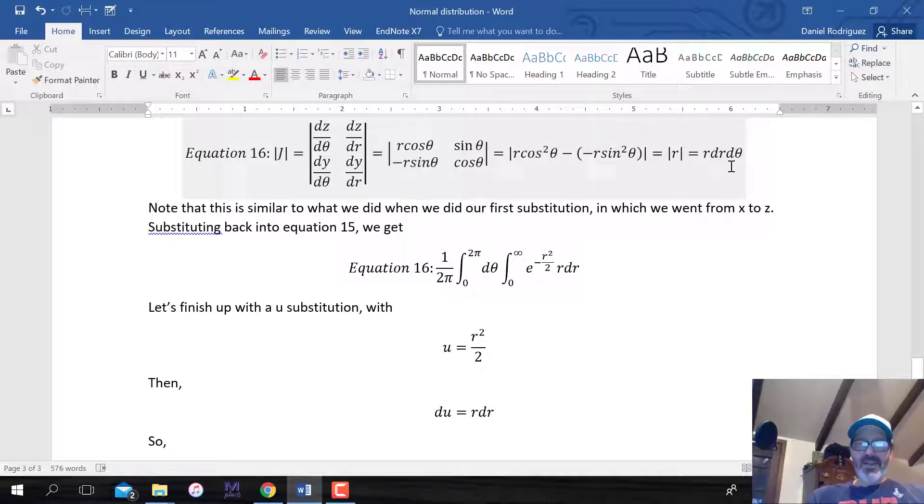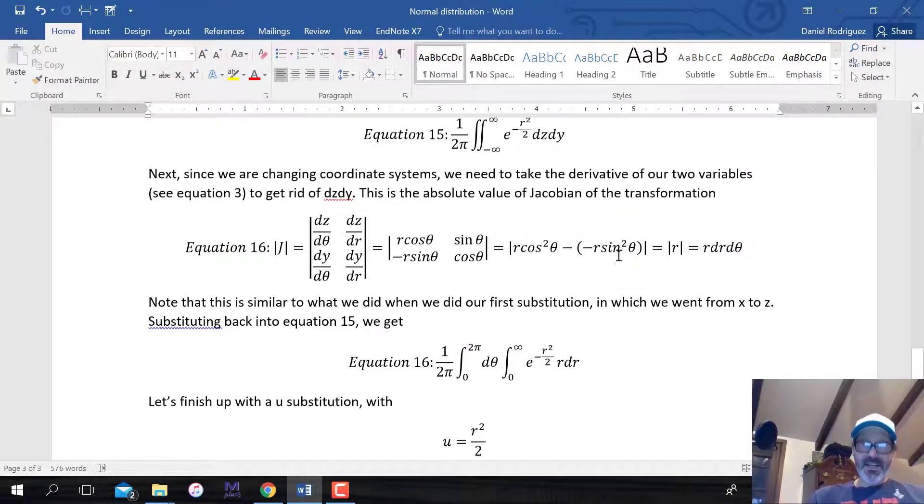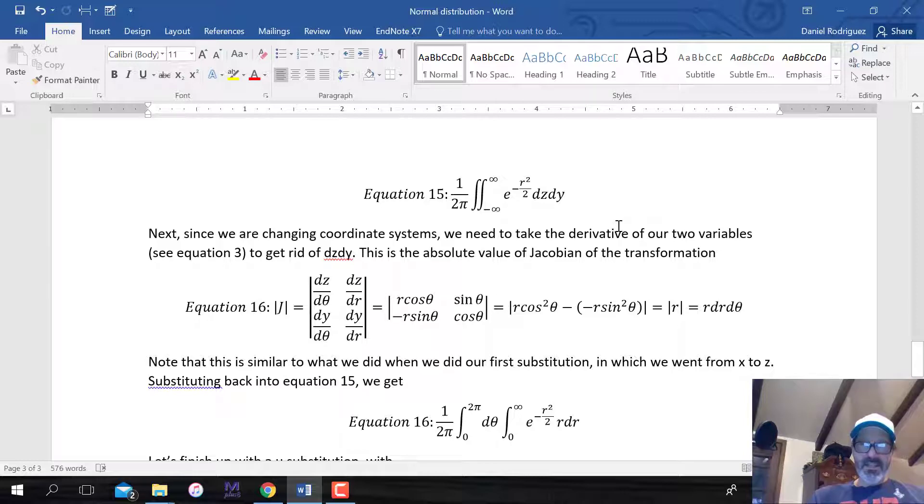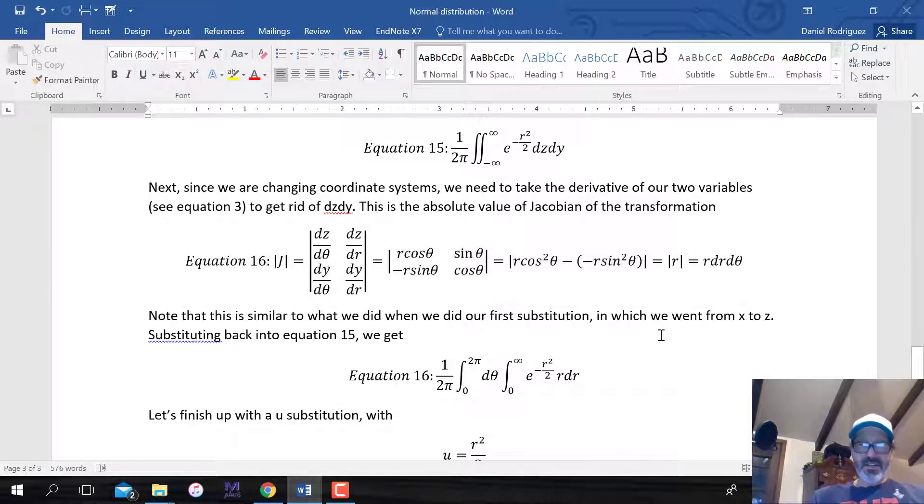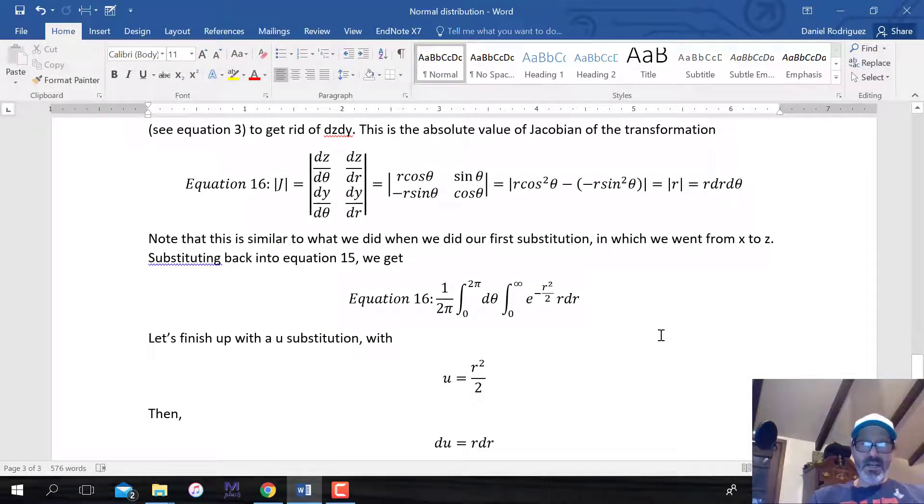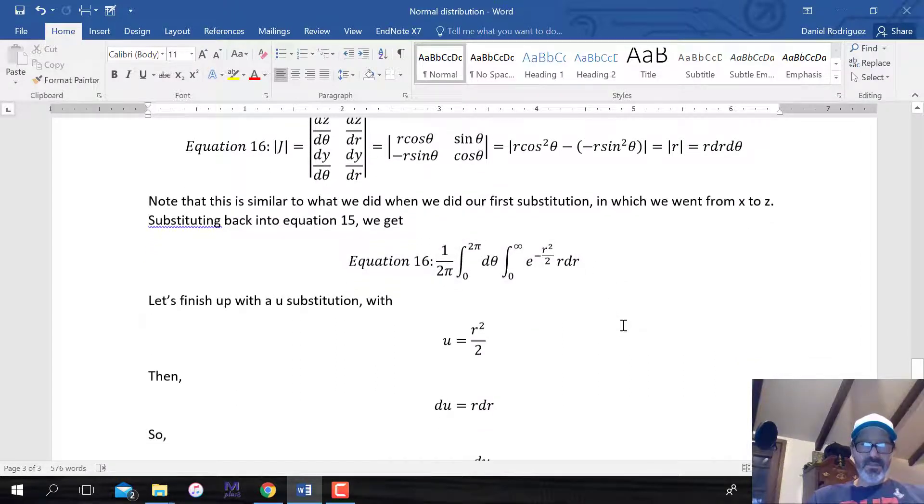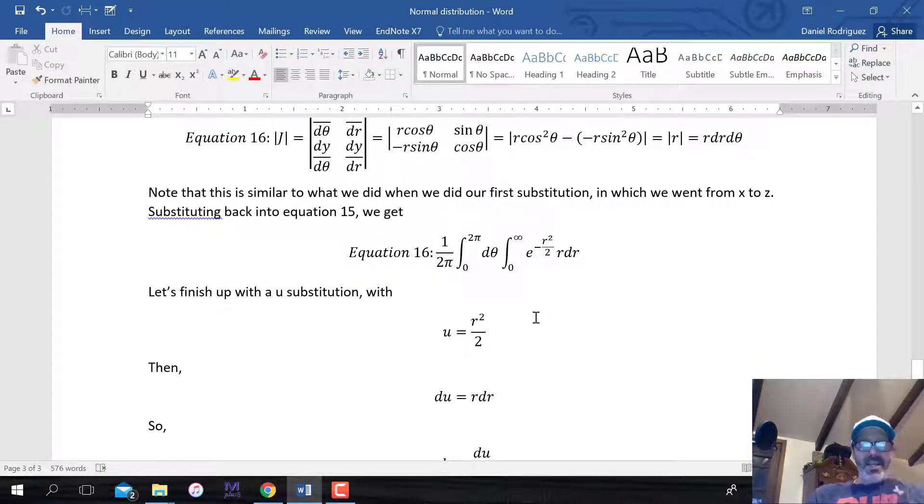We take the absolute value of r, which is just r in this case. So we're left with r dr d theta. How nice. Now we can substitute this for the dz dy. See what I did? Here we had dz dy. Now we substitute r dr d theta in there. How beautiful. It is so beautiful.